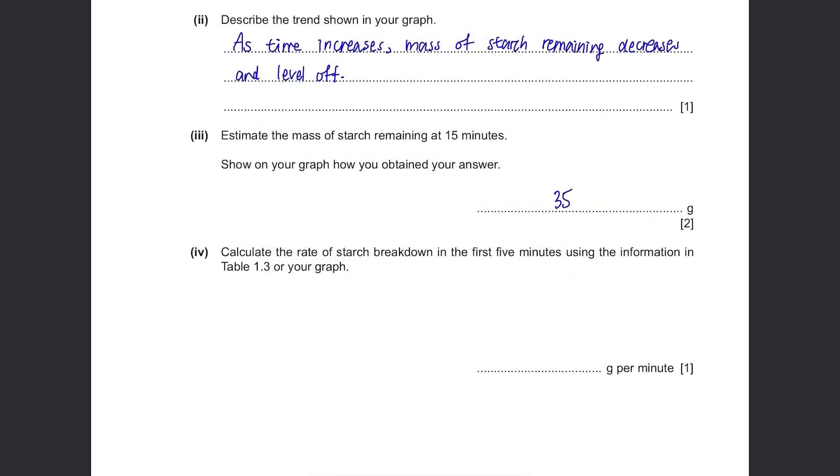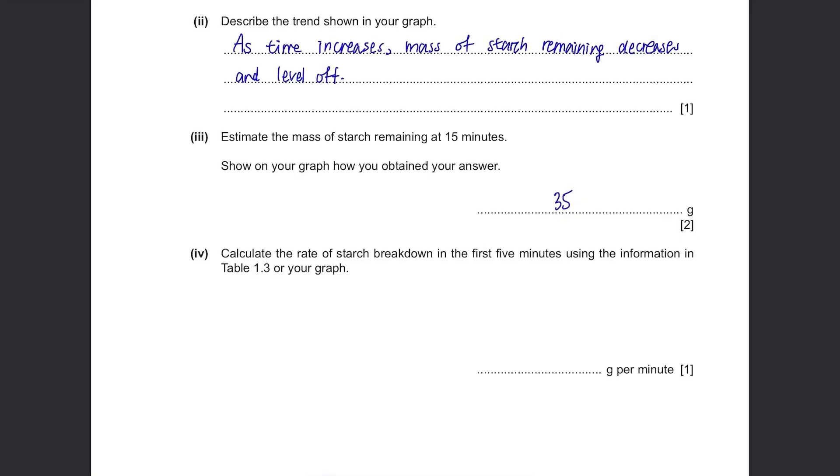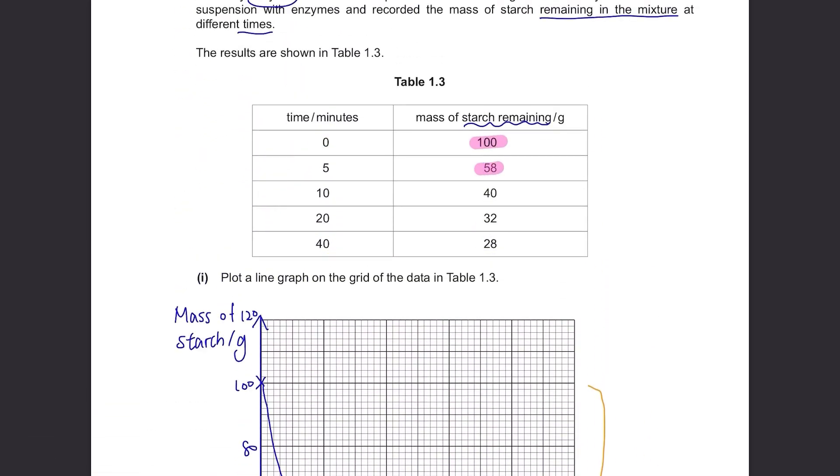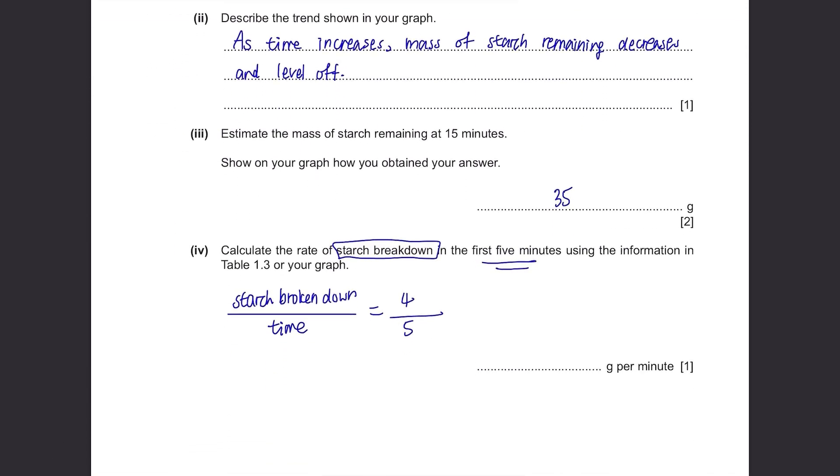Calculate the rate of starch breakdown in the first 5 minutes using the information in table 1.3 or your graph. The rate is always something divided by time and this time it's the starch breakdown so it will be the amount of starch broken down divided by time. Time is 5 minutes as given in the question and the amount of starch broken down can be calculated from table 1.3. Initially there were 100g of starch but it became 58g after 5 minutes so we can assume that 42g of starch were broken down. 42 over 5 equals to 8.4g per minute.